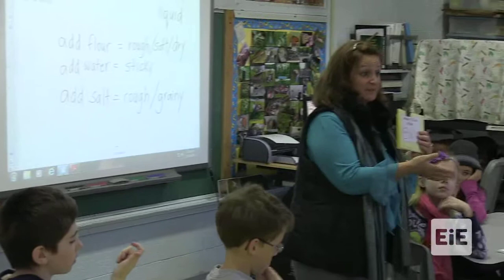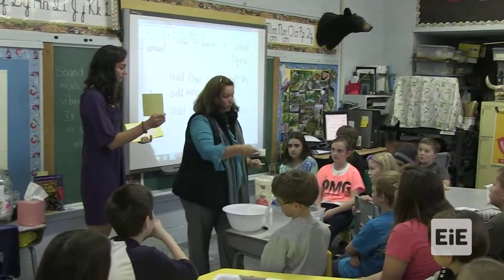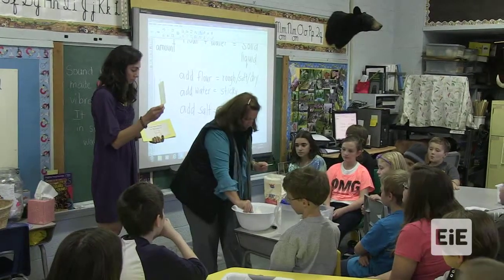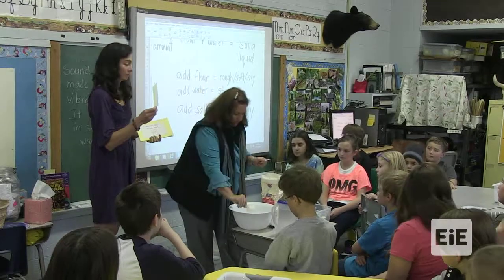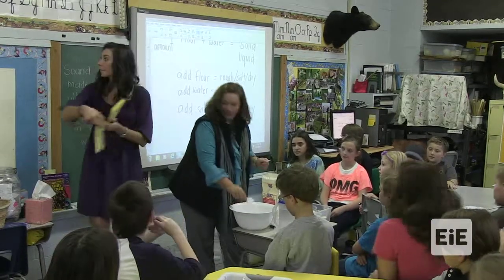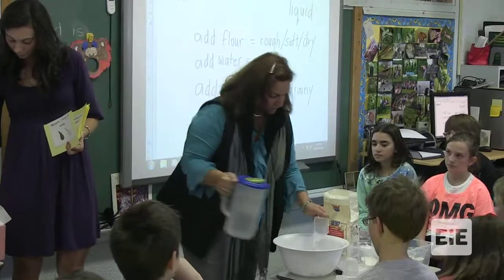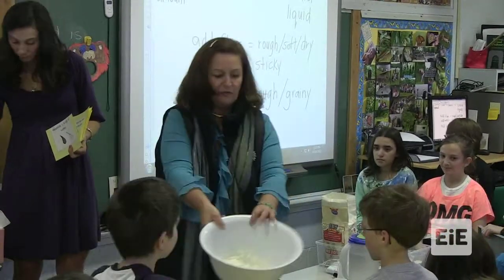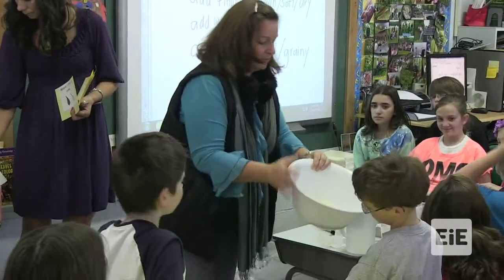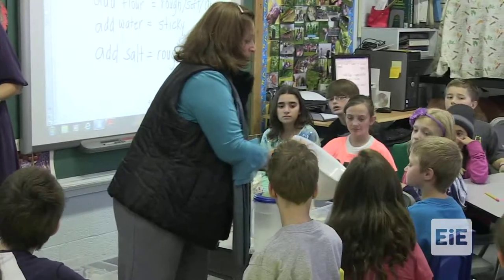One quarter plus one quarter equals what? One half. And add the water to the bowl. This is what we were talking about before when we said adding. What states of matter do we have? Solids and liquids.